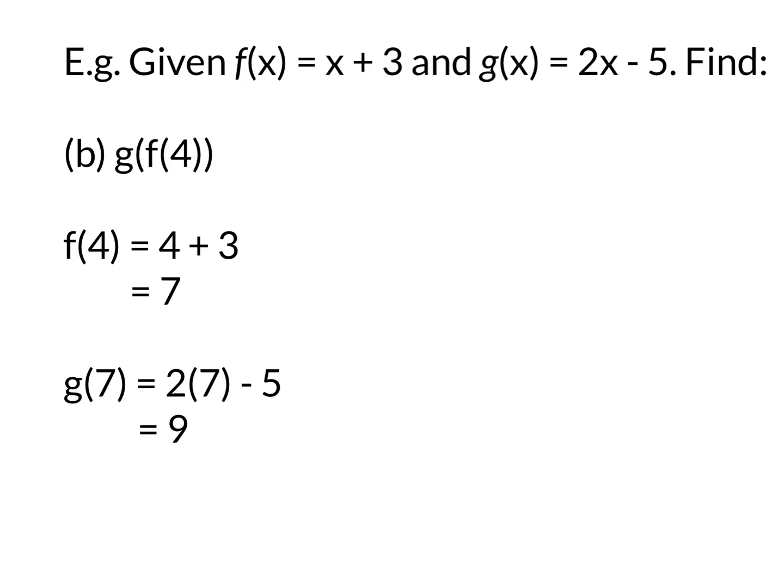This time the first function is g and the second function is f. So we put the 4 into the second function, which is f, 4 + 3 = 7, and then take that 7 and put it into the first function, the g, and you get 14 - 5 = 9.